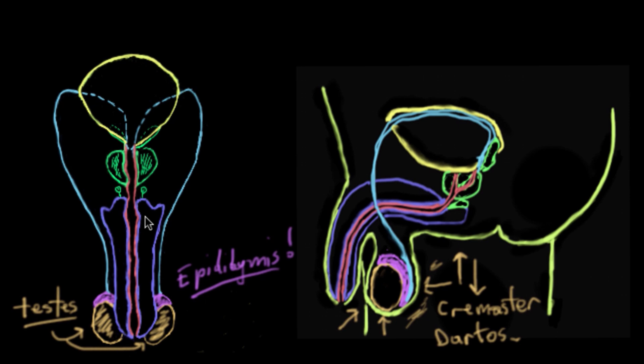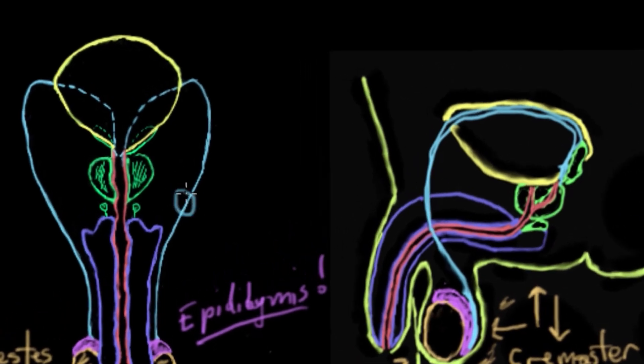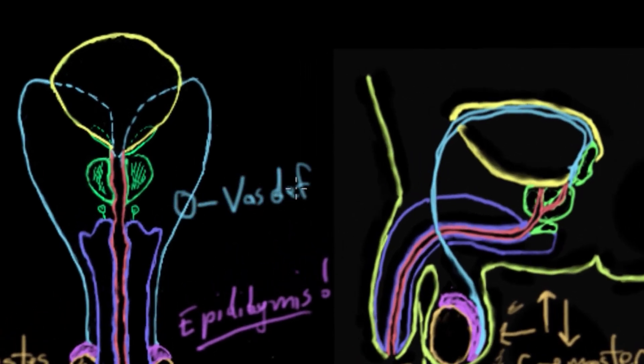In the epididymis, they also develop really long tails called flagellae, and that helps to propel them on their journey as well. From the epididymis, sperm drains out and into this tube called the vas deferens.